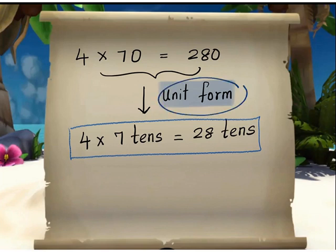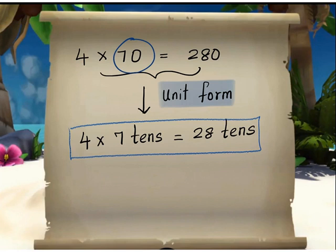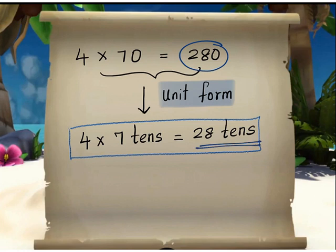How to write a number in unit form. 4 times 70 equals 280, so this is in standard form. Now let us convert that into unit form. 4 times 70 can be written as 4 times 7 tenths, since there are 7 tenths in 70. 280 can be written as 28 tenths, since there are 28 tenths in 280.